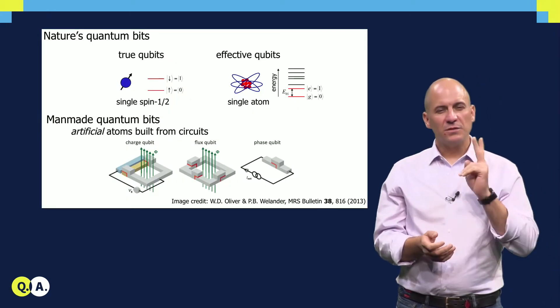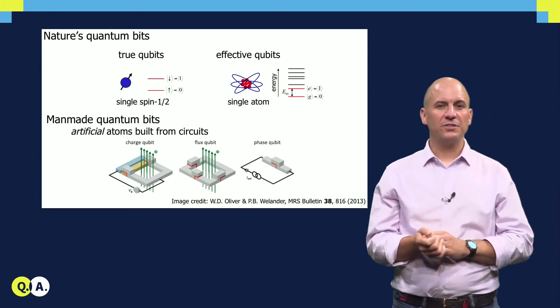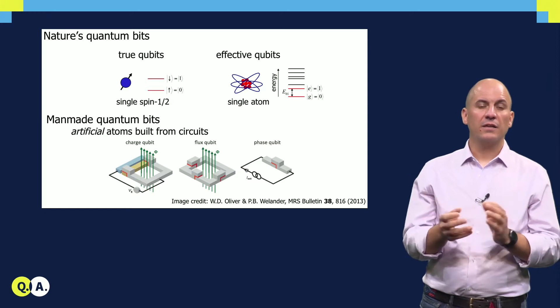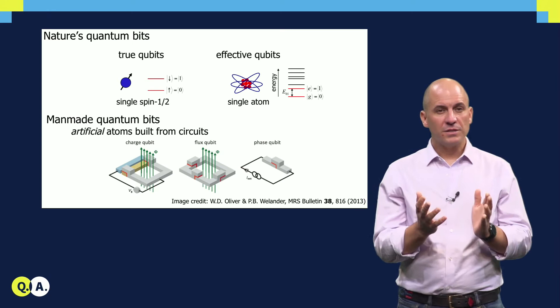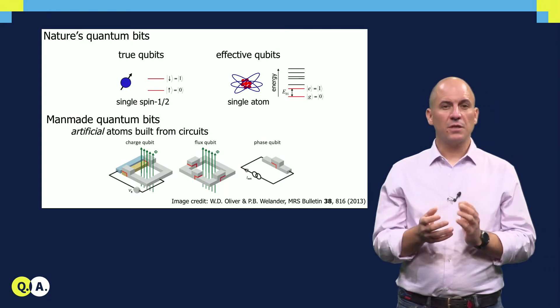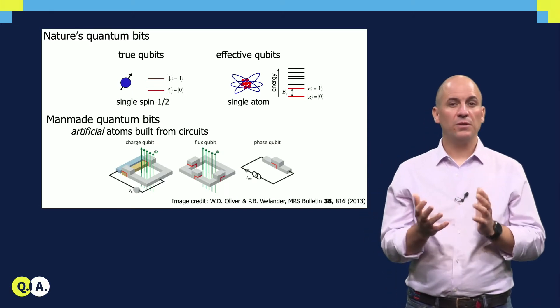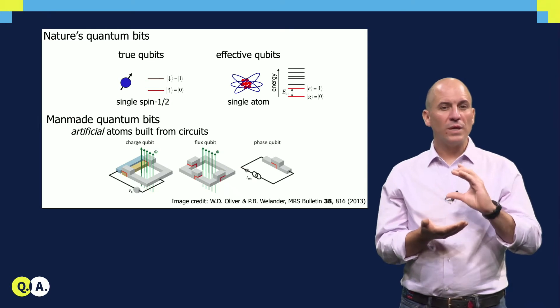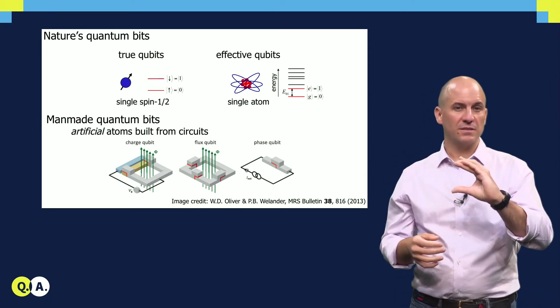Superconducting qubits differ in two important ways from truly quantum two-level systems provided to us by nature, such as the spin of an electron or the spin of certain nuclei, like carbon-13 or silicon-29. First, they are multi-level systems, not unlike the electronic levels in atoms. Multi-level quantum systems can be used effectively as qubits by confining all dynamics to two quantum levels, usually the ground and the first excited state of the system.